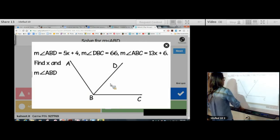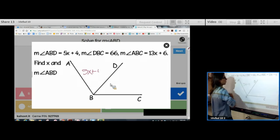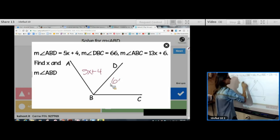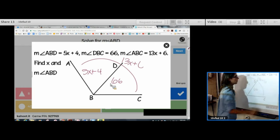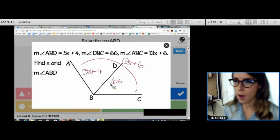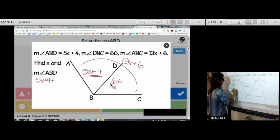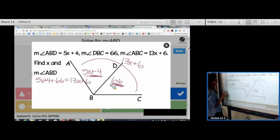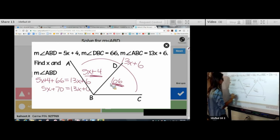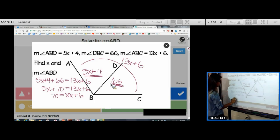All right, let's try this problem. We have angle ABD is 5x plus 4 and DBC is 66. So you know, you will for sure get one like this tomorrow, because this is a basic angle addition problem. So, we do part 5x plus 4 plus part 66 equals whole angle addition postulate. So, we have 5x plus 70. Subtract 70 from both sides. 70 equals 3x plus 6. Subtract 6 from both sides. 64 equals 8x. X is 8.